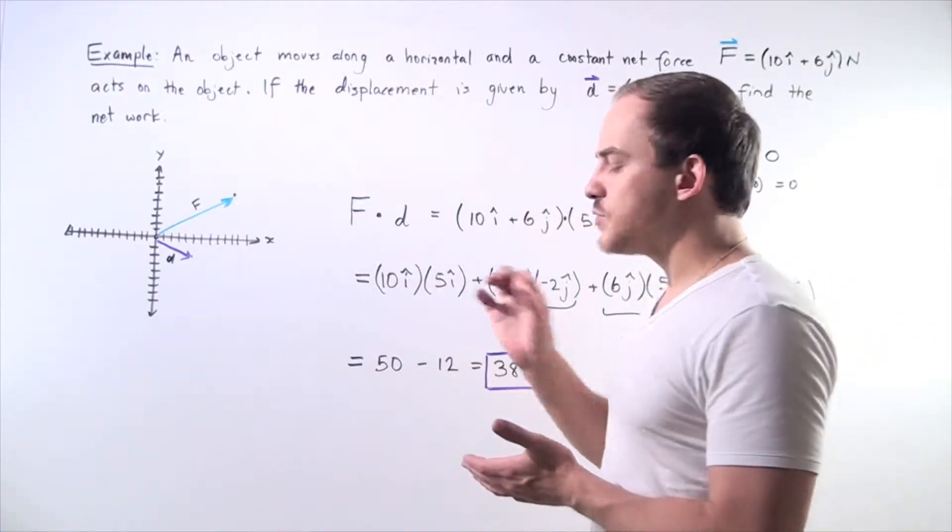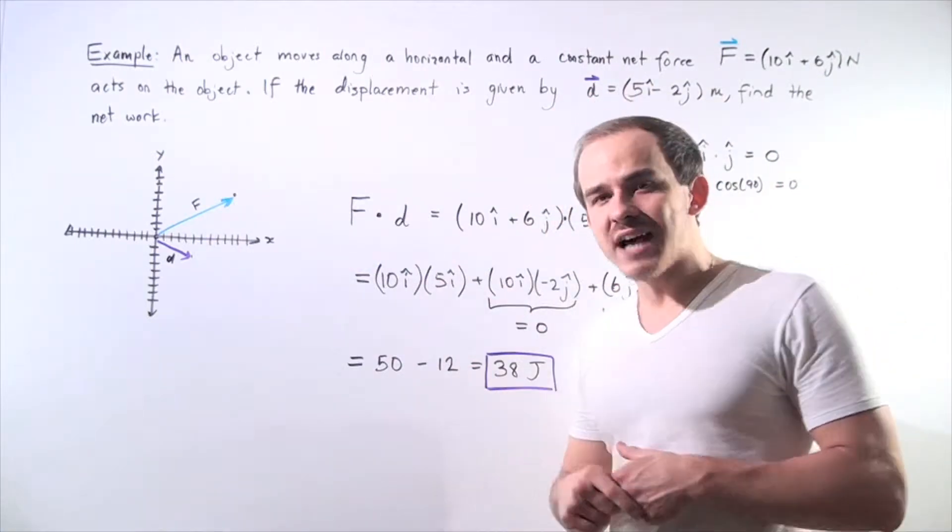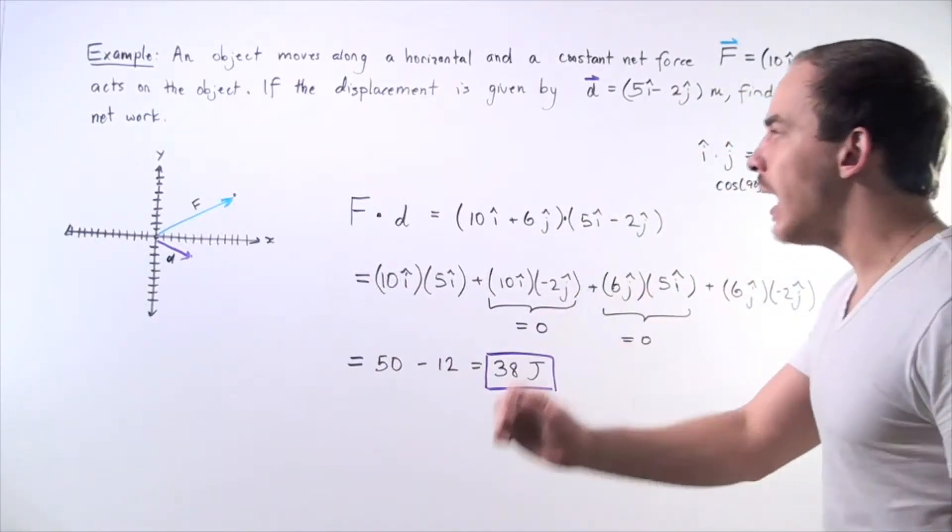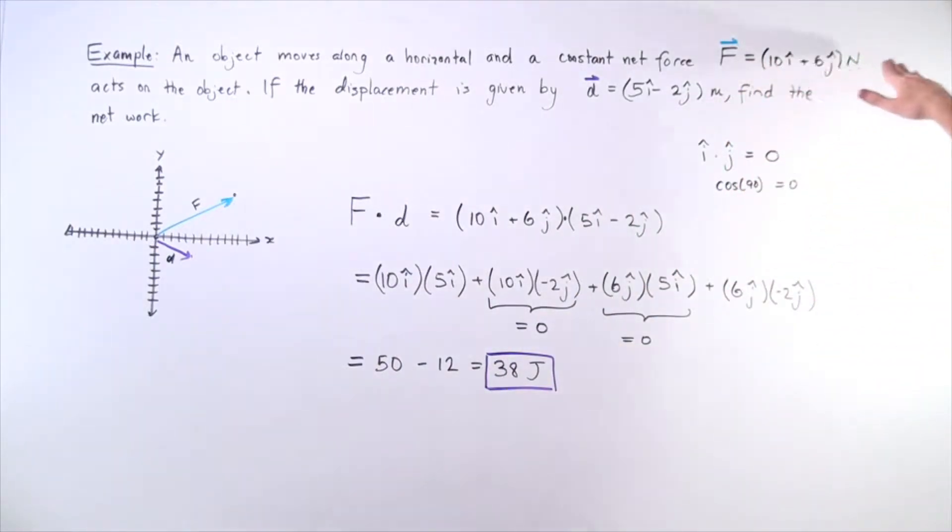Let's suppose we have an object that moves along a horizontal and a constant net force acts on my object given by this vector. So we have two components, the x component and the y component.